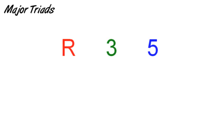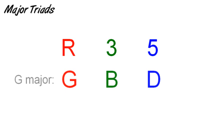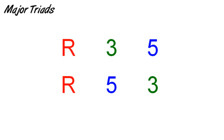Let's start by looking at major triad chord inversions. The major triad consists of a root, major third, and fifth. For example, a G major triad would consist of the notes G, B, and D. With the root note as the lowest note in the chord, we have two possible root voicings. These are called root positions, because the root is the note on which the other chord tones are stacked.